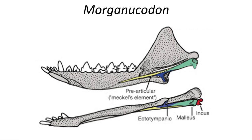In the first mammal, Morganucodon, we see how this transformation occurred. The tympanic membrane is supported by the bones in the lower jaw, with contributions from the ectotympanic — formed from the surangular bone — the malleus bone formed from the articular bone, and the incus formed by the quadrate bone from the skull. These bones sit at the jaw joint, with sound conducted through just the stapes.